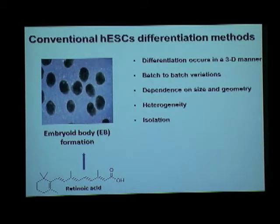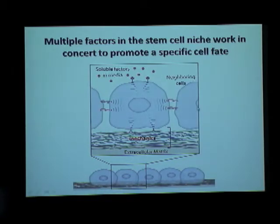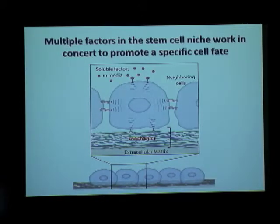Why is it so difficult to differentiate these cells into a particular cell type? In vivo, in order to maintain pluripotency or determine a particular cell fate, a lot of factors come into play: cell-cell interactions, interactions of soluble factors in the medium, and most of all, cell-matrix interactions. A lot of development has been done on soluble factors and neighboring cell interactions, but controlling the substrate is highly undeveloped. Functional tissues have elasticities in the range of 1 kPa to 100 kPa, but traditional tissue culture materials are completely out of that range.